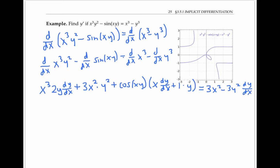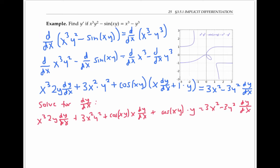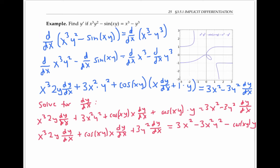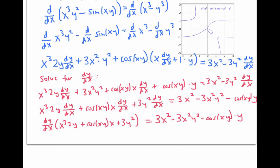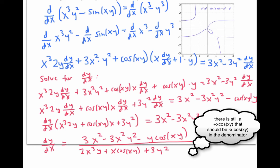The right-hand side is easier: the derivative of x³ is 3x², and the derivative of y³ with respect to x is 3y²·(dy/dx). Now we solve for dy/dx. Since it appears in three different places, we first distribute to free it from parentheses, then move all dy/dx terms to the left side and all other terms to the right. Factoring out dy/dx and dividing both sides by the remaining expression isolates dy/dx, giving us the derivative via implicit differentiation.